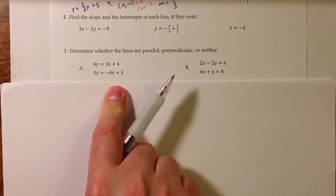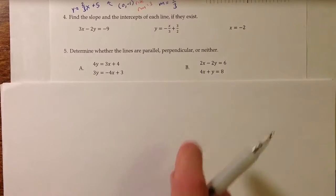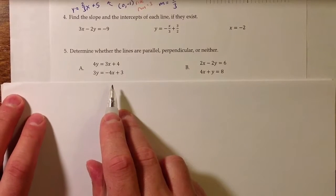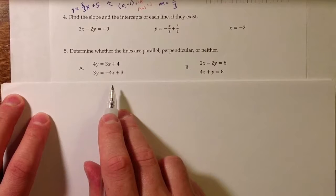For number five, I'd like to determine for each of these pairs whether the lines are parallel, perpendicular, or neither. And the answer, in order to analyze this, depends on the slope. So let's find the slope for each line.